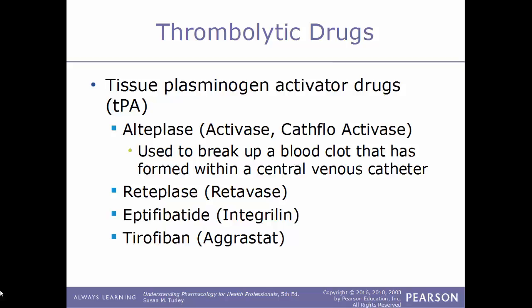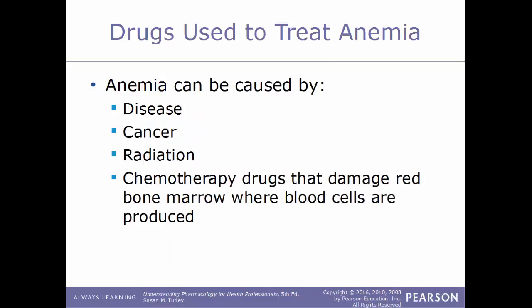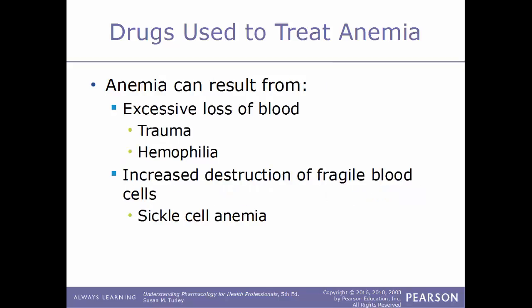Now we will talk about drugs used to treat anemia. Anemia is a decrease in the number of red blood cells produced in the red bone marrow — another term for red blood cells is erythrocytes. This could be due to insufficient amounts of amino acids, folic acid, iron, or vitamin B12. Anemia can also be caused by disease, cancer, radiation, or chemotherapy drugs that damage the red bone marrow. Anemia may result from excessive blood loss such as in trauma or hemophilia, or from increased destruction of fragile blood cells, as in sickle cell anemia.